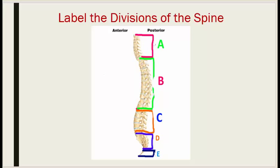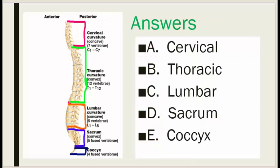Label the divisions of the spine. Answers: A is cervical, B is thoracic, C is lumbar, D is sacrum, E is coccyx.